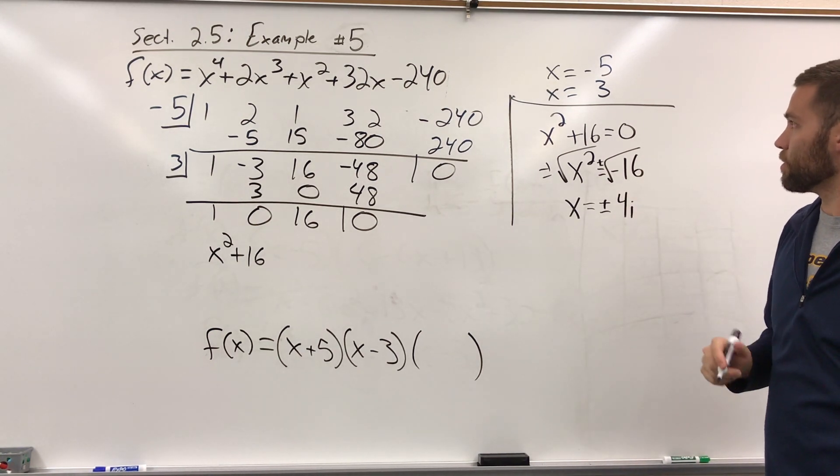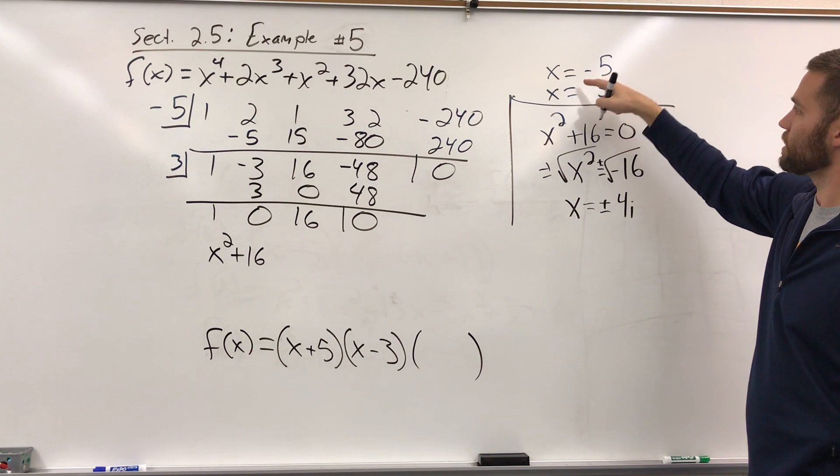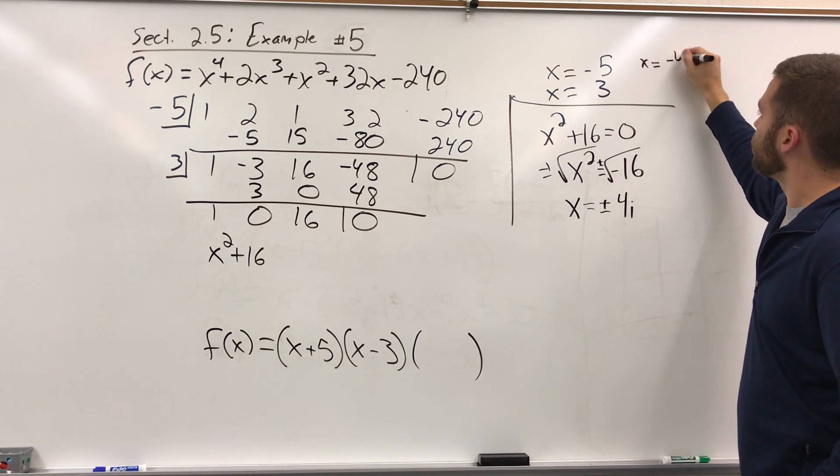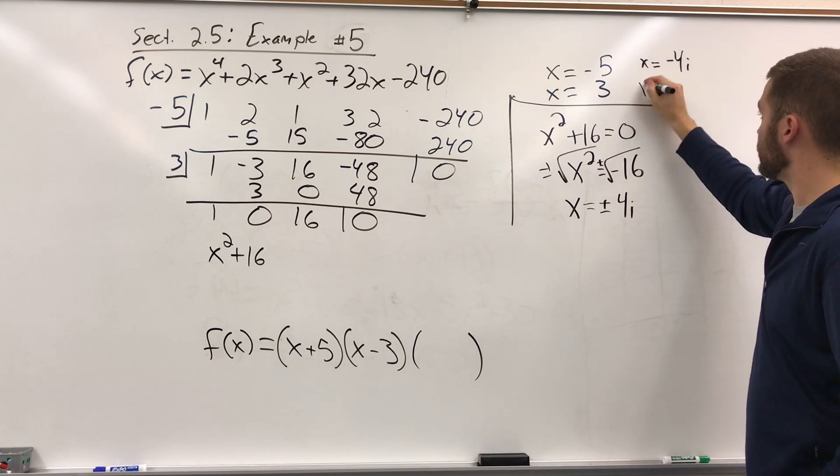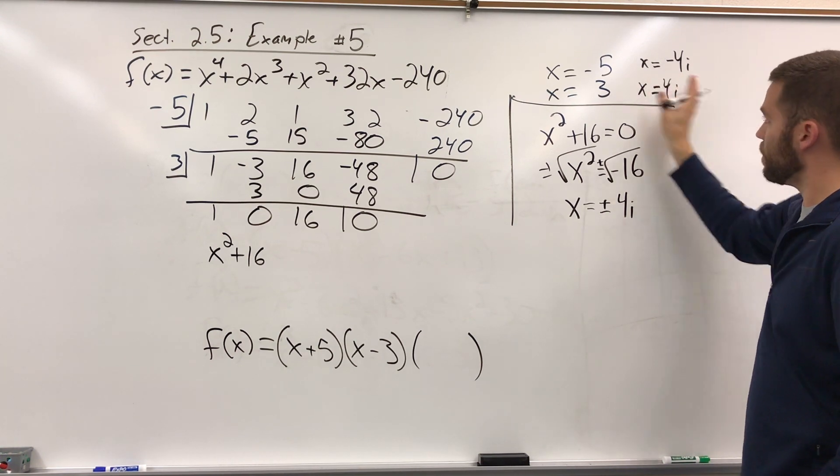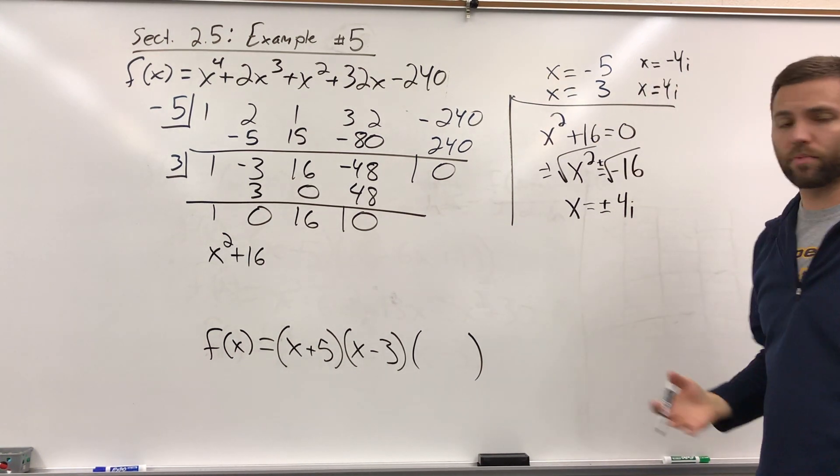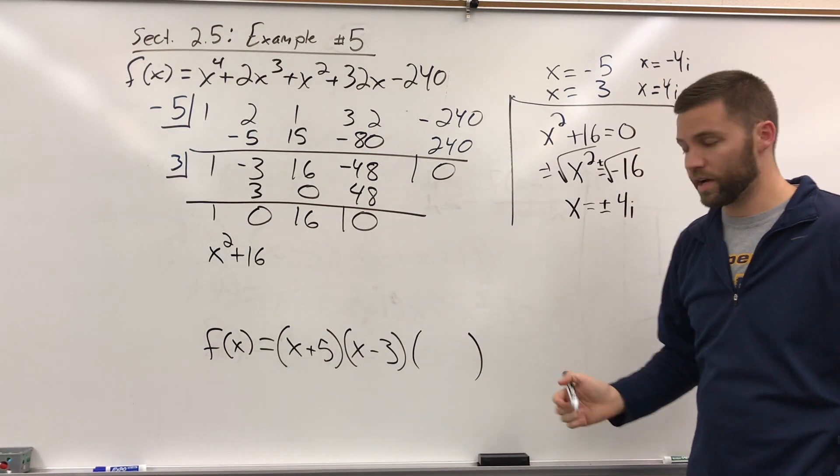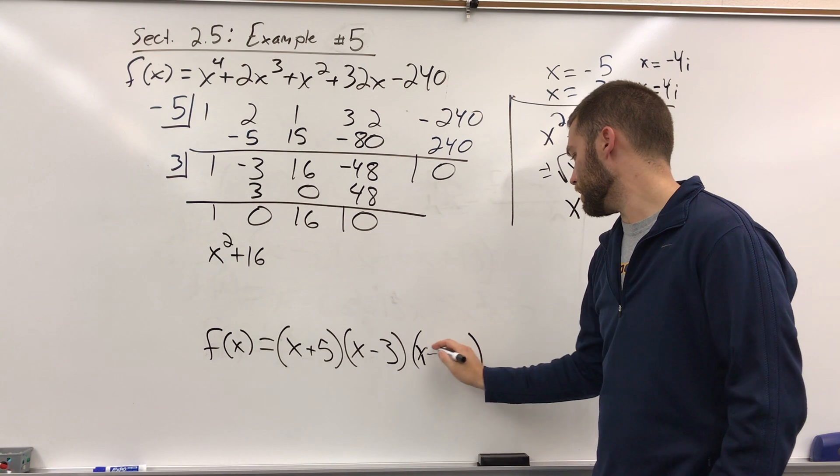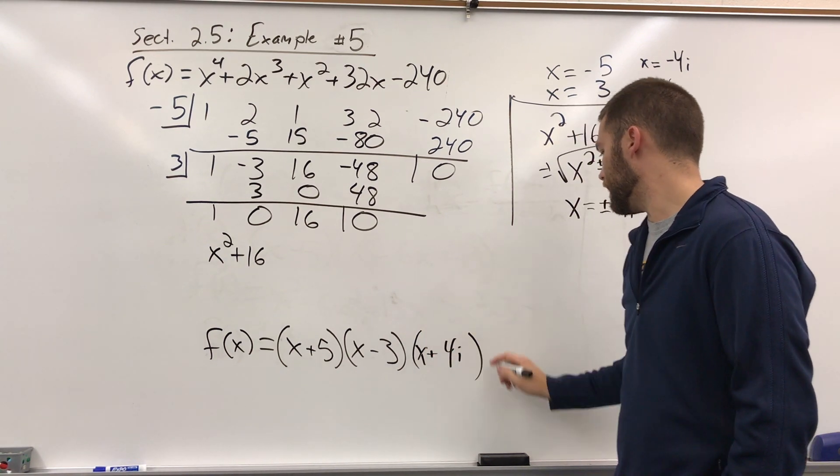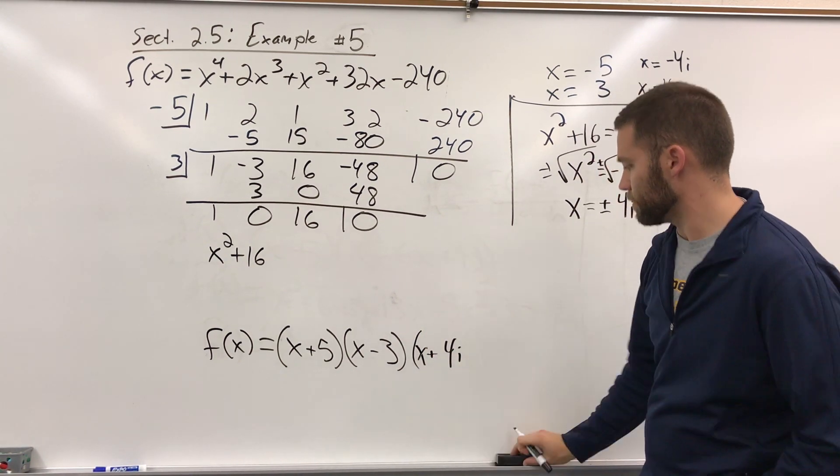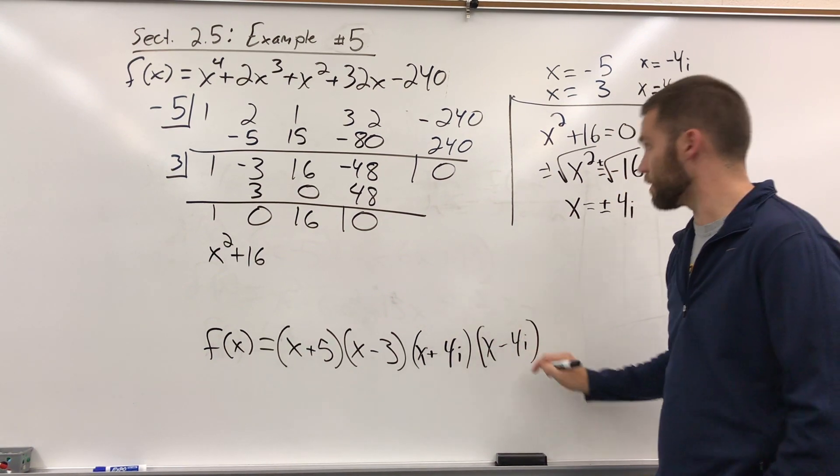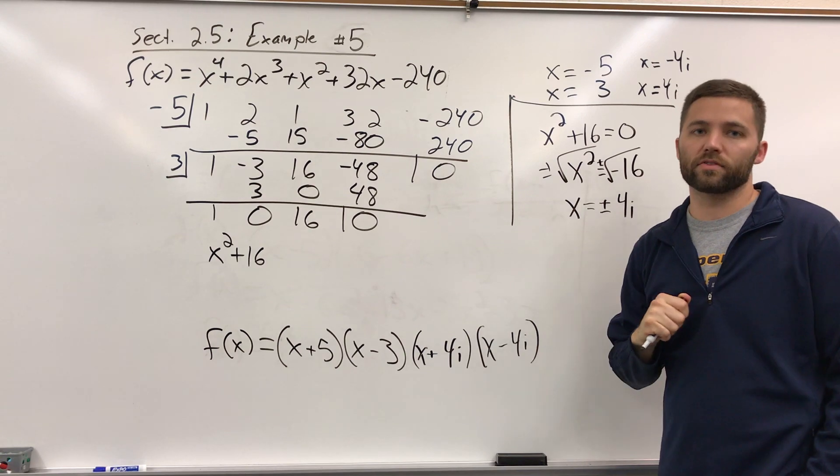So all my zeros, if I was to list them out, we'd have x equals negative 5, x equals 3, x equals negative 4i, and x equals positive 4i. There's all my zeros. To write this as a product of linear factors then, I'm going to take these other two zeros and write them as linear factors. So I get x plus 4i and x minus 4i. And there I've written this polynomial as a product of linear factors.